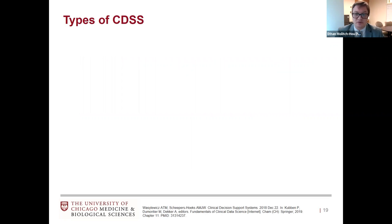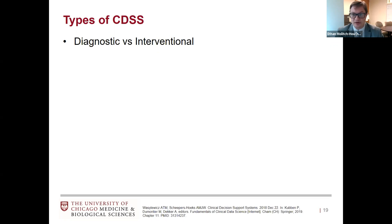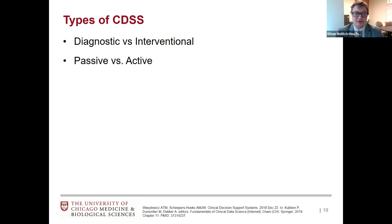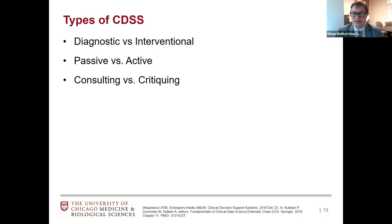There are a few different types of clinical decision support systems. One branching point is diagnostic versus interventional — diagnostic is figuring out what the diagnosis is in front of you, versus interventional which is deciding what to do: which tests to order, what interventions to take. CDSS can be passive versus active — passive means the information is there but you sometimes have to go out of your way to click on it, while active is probably what most people are familiar with — alerts that come up about drug interactions.